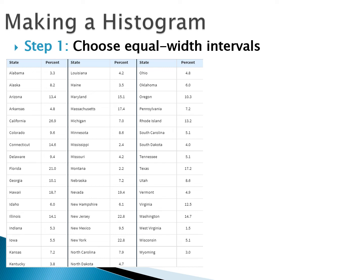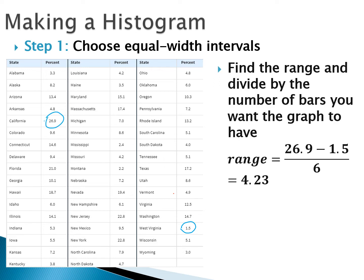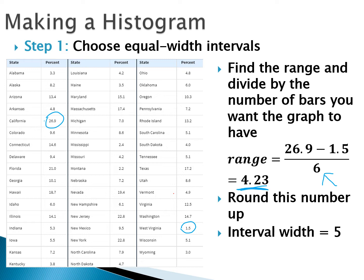To choose our intervals, we note the maximum and minimum values. The minimum looks like West Virginia, and the maximum is 26.9 for California. We find the range by subtracting those. Then we decide how many bars we want — six is chosen here, but it's arbitrary; five or seven would also work. We divide the range by the number of bars and round the result up to get the interval width. Even if it's 4.00001 or exactly 4, we round up to 5. Our interval width for this graph will be five.